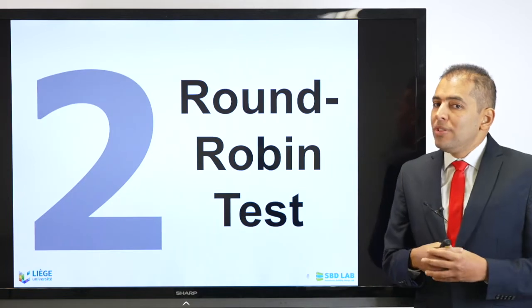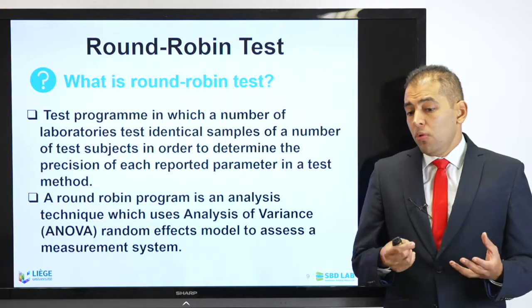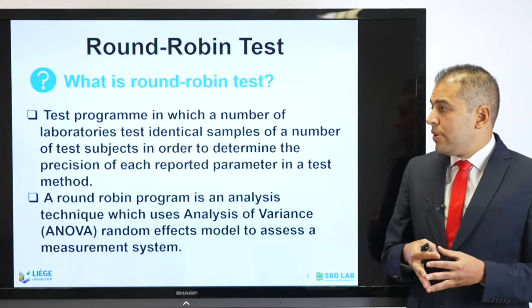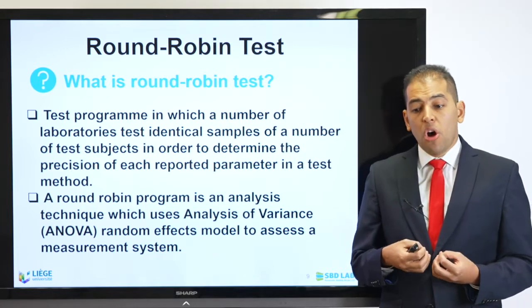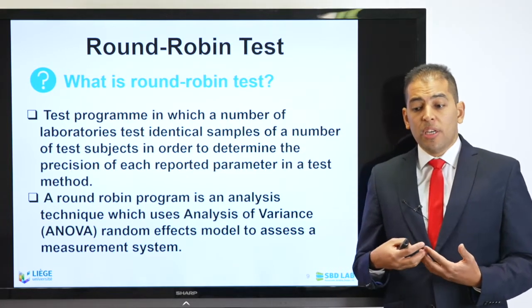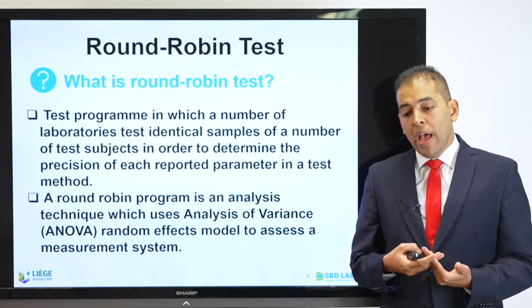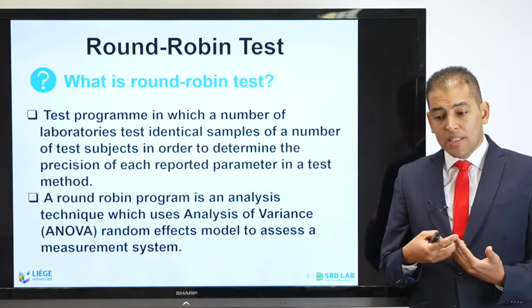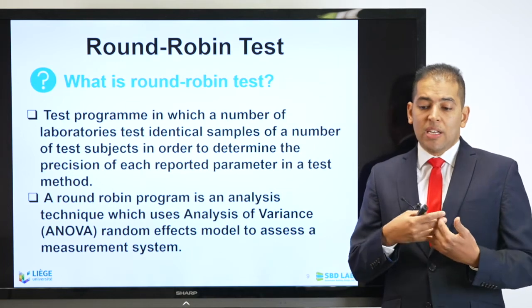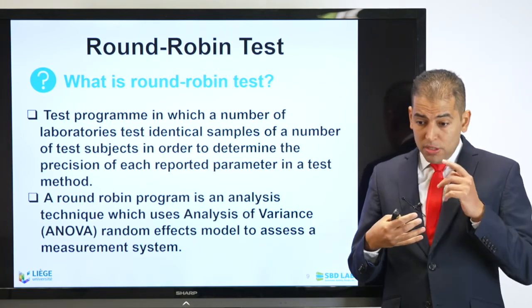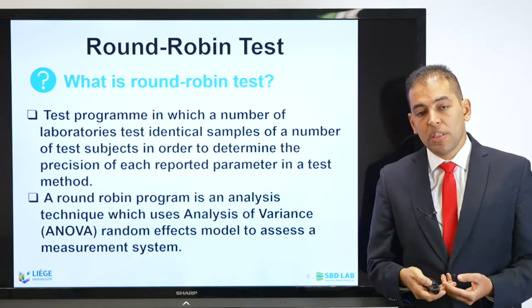Now let's go into detail to understand exactly what this round-robin test is. It is a test program in which a number of laboratories test identical samples of a number of test subjects in order to determine the precision of each reported parameter in a test method. A round-robin program is an analysis technique which uses mainly ANOVA, or the analysis of variance, with a random effects model to assess a measurement system.